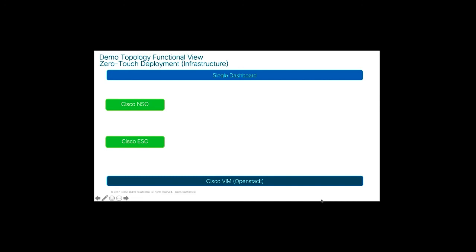The demo starts from an existing OpenStack infrastructure created by Cisco CVIM. A single dashboard triggers the configuration, utilizing NSO (Network Service Orchestrator) to orchestrate and send all configuration. Cisco ESC (Elastic Server Controller) configures all virtual machines. The single dashboard sends REST API calls to Cisco NSO; NSO sends NETCONF to Cisco ESC; ESC sends REST API to OpenStack to start creating all the virtual machines.